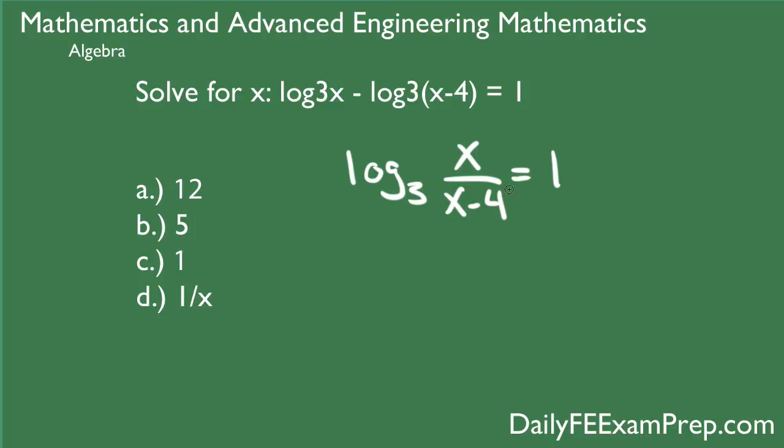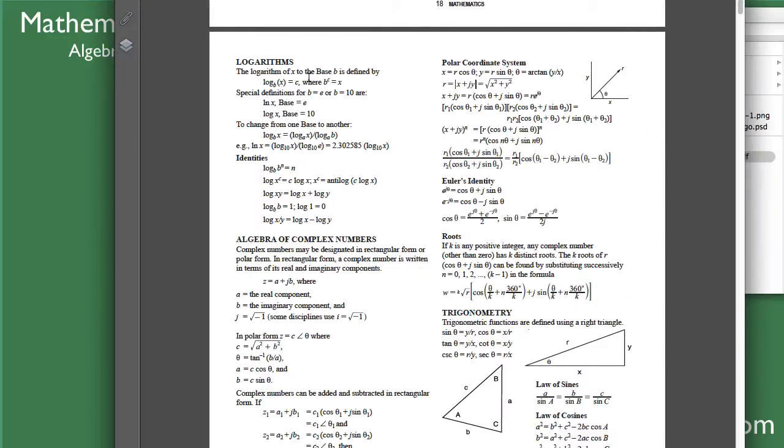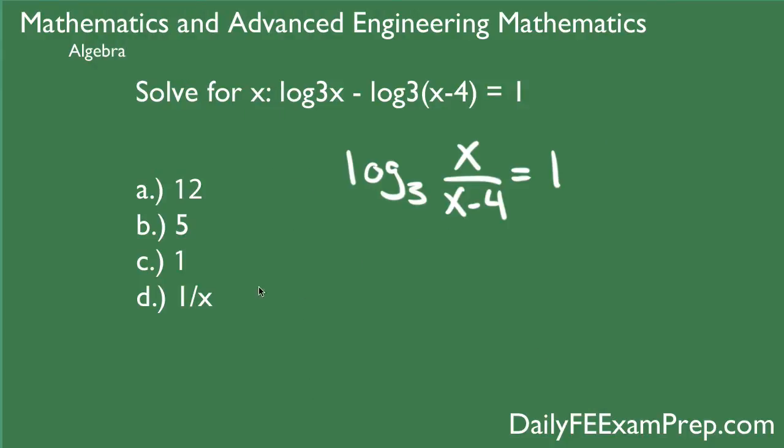So now if we go back to page 19, we have to reference the logarithmic property that tells us that log_B(x) equals C where that base number B raised to the C number is equal to x. So let's go ahead and translate that to what we've got right now. We know that our base is 3, our x value here is x over (x-4), and our C is equal to 1.